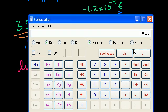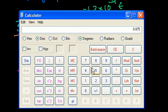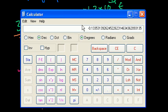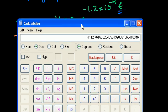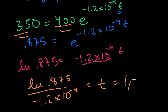So if you have 0.875, we want to take the natural log of it and divide it by minus 1.2 E negative, 10 to the negative 4. And this is all a negative number. So this is equal to 1,112 years to get from 400 to 350 grams of my substance.